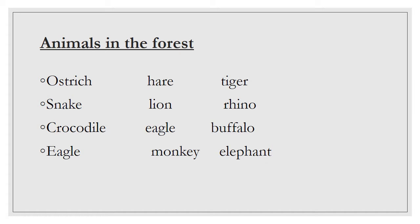Wild animals are found in the forests. They are dangerous and can harm us. Examples of wild animals are ostrich, snake, crocodile, eagle, hare, lion, monkey, tiger, rhino, buffalo, elephant, zebra, and many others.